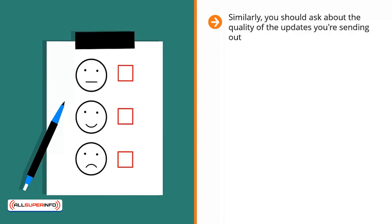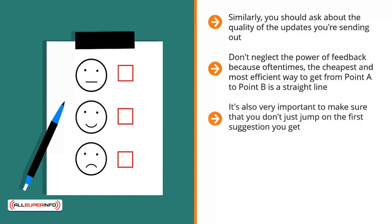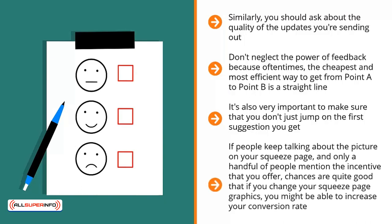Similarly, you should ask about the quality of the updates you're sending out. More specifically, ask your list members: 'What improvement should I make for you to forward my emails to people you know?' Don't neglect the power of feedback — oftentimes the cheapest and most efficient way to get from point A to point B is a straight line. Ask your list members but offer an incentive. Also, make sure you don't just jump on the first suggestion you get. Look at the total amount of responses and pay attention to the most common theme. If people keep talking about the picture on your squeeze page, chances are changing your graphics might increase your conversion rate. Look for these patterns; don't get thrown off track by outlier responses.